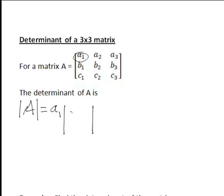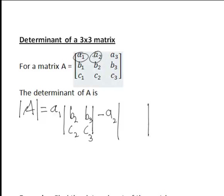That gives us the determinant of B2, C2, B3, C3. Then, going along to the next element, it will be minus A2 times the determinant obtained when we cover up the first row and the second column, which contains A2.